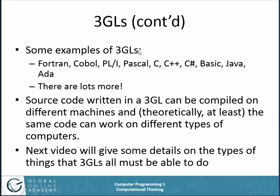Here are some examples of third generation languages: FORTRAN, COBOL, PL1, and PASCAL are some older ones that were very popular at one time. More recent ones include C, C++, C Sharp, BASIC, Java, Ada, and many more. Some of you may have heard of Python — that's a third generation language, even though it's fairly recent compared to some of the others.